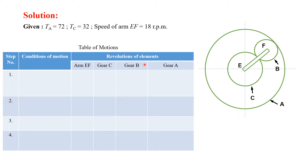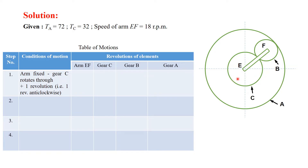The table of motions specifies the condition of motion and the revolutions of each element, which have to be calculated. In Step 1, we fix the arm EF, and gear C is rotated through plus one revolution, that is, in the anticlockwise direction. Since the arm is fixed, arm EF has zero revolutions.